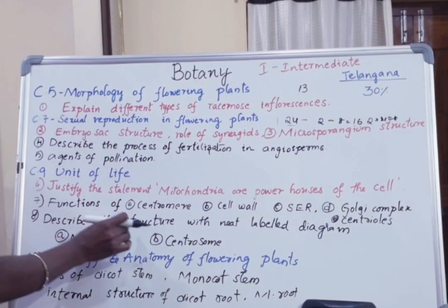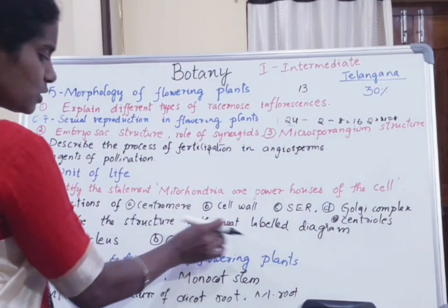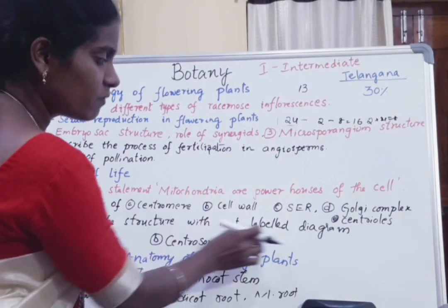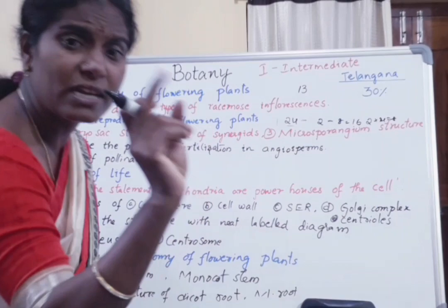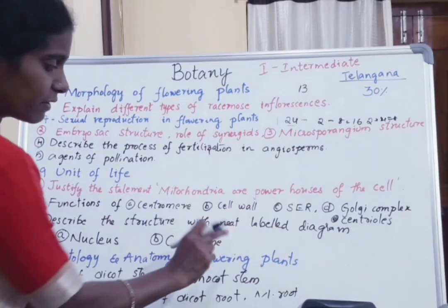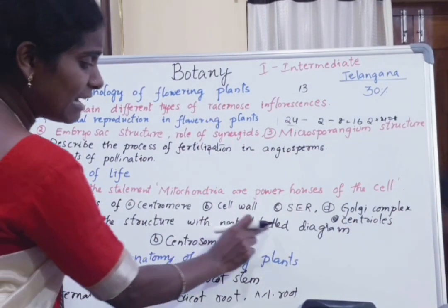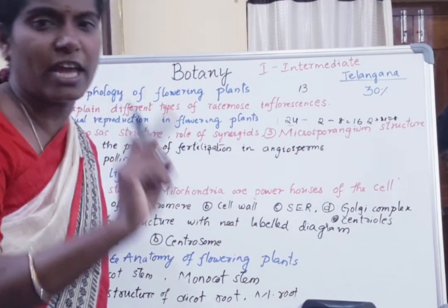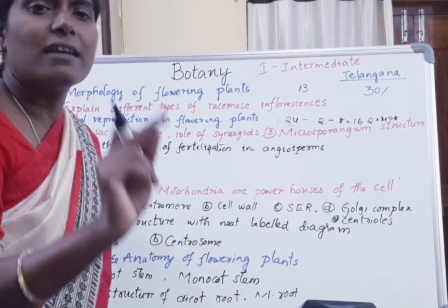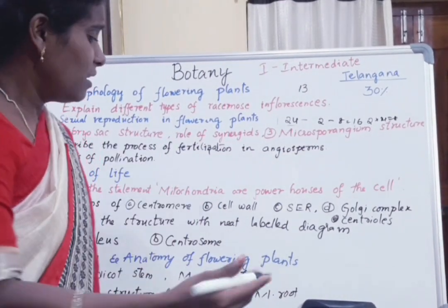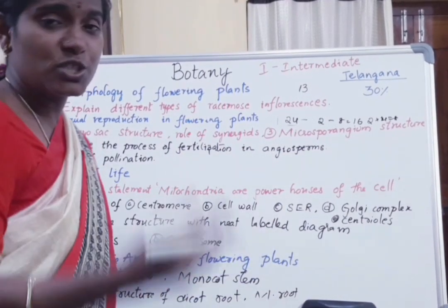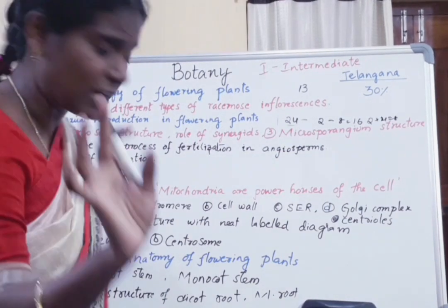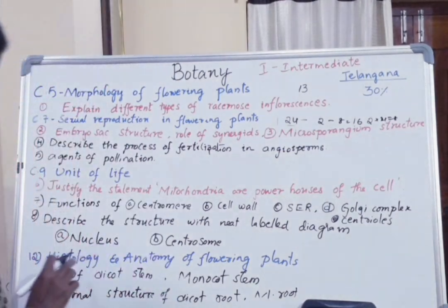Next, the structure of nucleus and centrosome should be explained with a neat labeled diagram. Questions may ask for a neat labeled diagram, so diagrams must be drawn. Without a diagram, marks will definitely be deducted — diagrams carry definite marks.